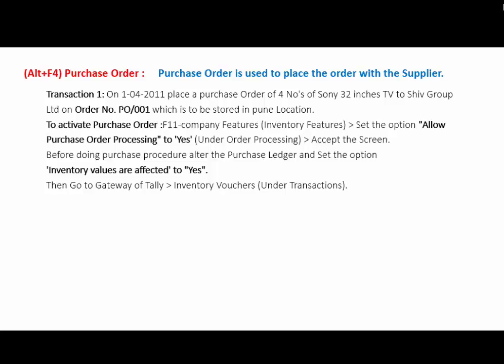Before doing the purchase order entry, alter the purchase ledger and set the option Inventory Values are affected to Yes. Then go to Gateway of Tally, in Inventory Vouchers, and press ALT+F4 for purchase order entry.